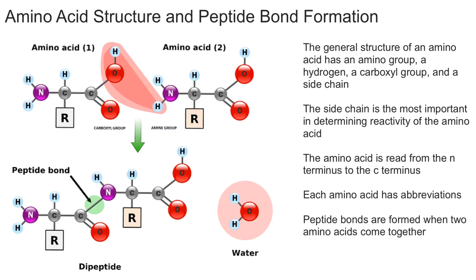Getting back to amino acid structure and how a peptide bond forms: we have an amino group, a carboxyl group, a hydrogen, all attached to a central carbon, and then the variable R side chain. Amino acids can be combined to make proteins, because proteins are essentially just a string of amino acids combined together.